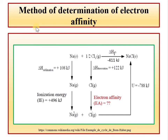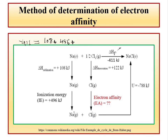Yahaan par aap example dekhenge jahaan par method of determination — aap ne values di hui hain. Toh values kya hain dekhiye — sublimation ki energy 108 kJ/mol, ionization energy 496 kJ/mol, dissociation energy +122 kJ/mol, heat of formation bhi di, lattice energy bhi di hai. Mein kya nikalni hai? Electron affinity nikalni hai. Toh hum kaise nikalenge — dekhiye, jo heat of formation hai uski value kitni? Minus 411. Minus 411 is equal to kya hoga — jo heat of sublimation hai woh kitni? 108. Plus ionization energy kitni? 496. Plus jo dissociation energy woh kitni? 122. Aur jo lattice energy woh kitni? Minus 0.78. Plus electron affinity — so electron affinity ko nikal lenge. Calculate kar sakte hain easily. Toh ee kitni aegi? Jo ee calculate hoke aegi woh hogi minus 349 kJ/mol.